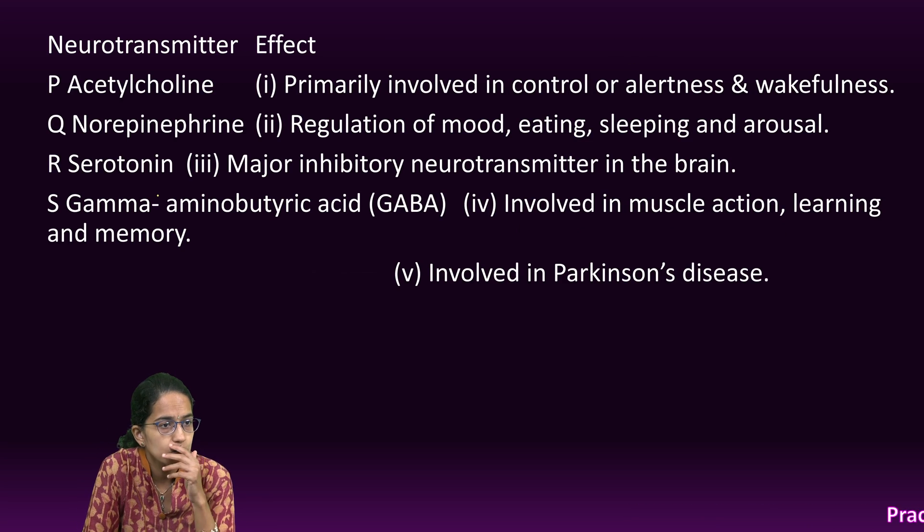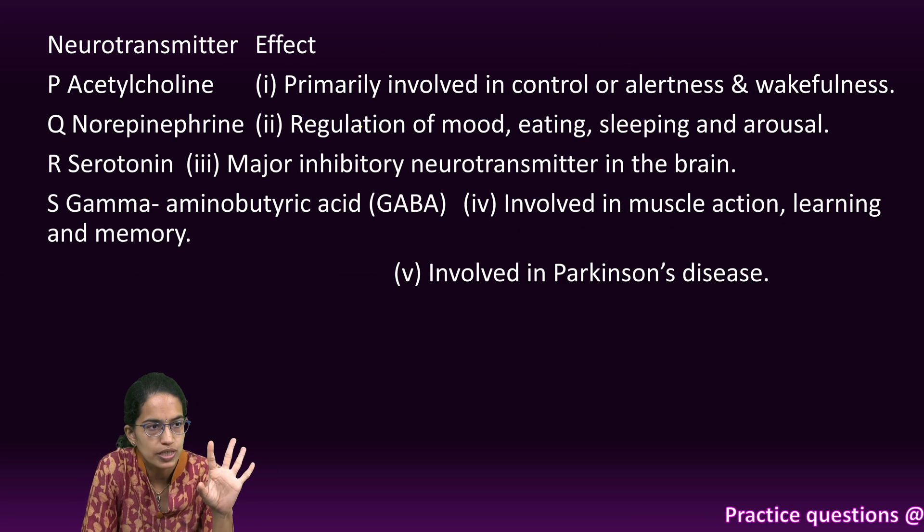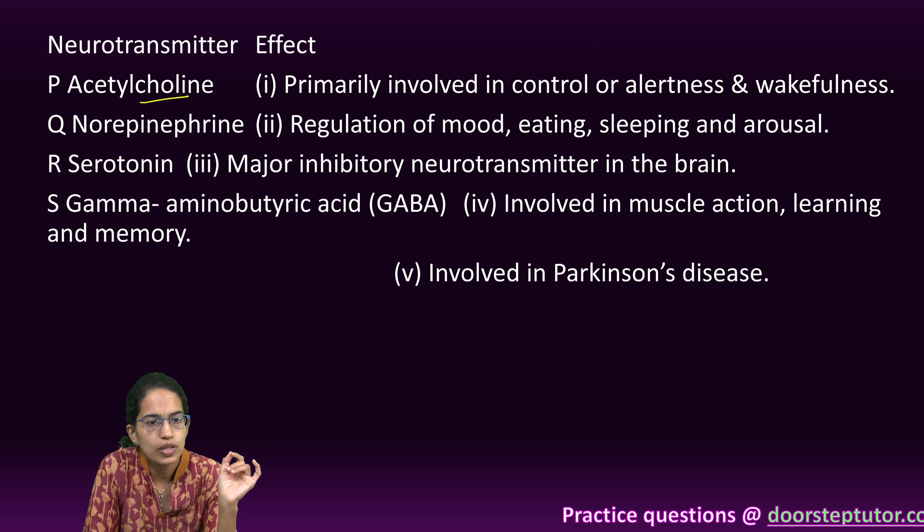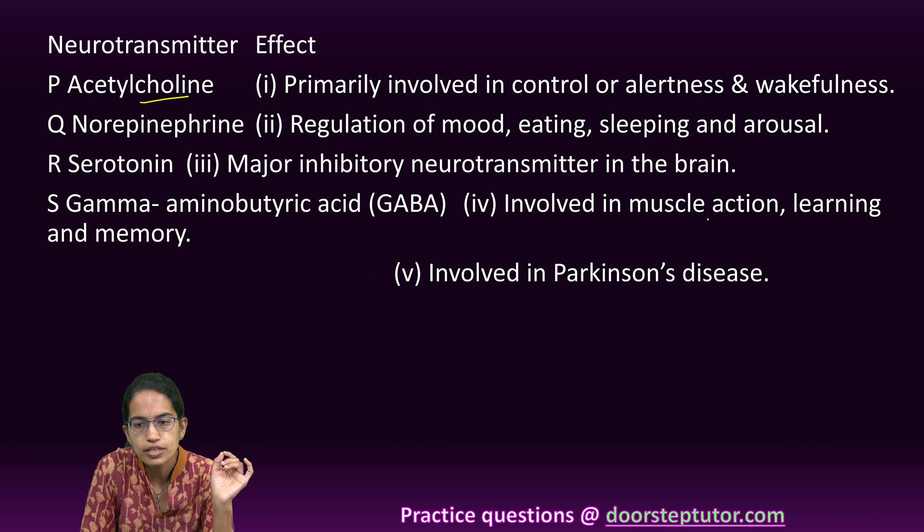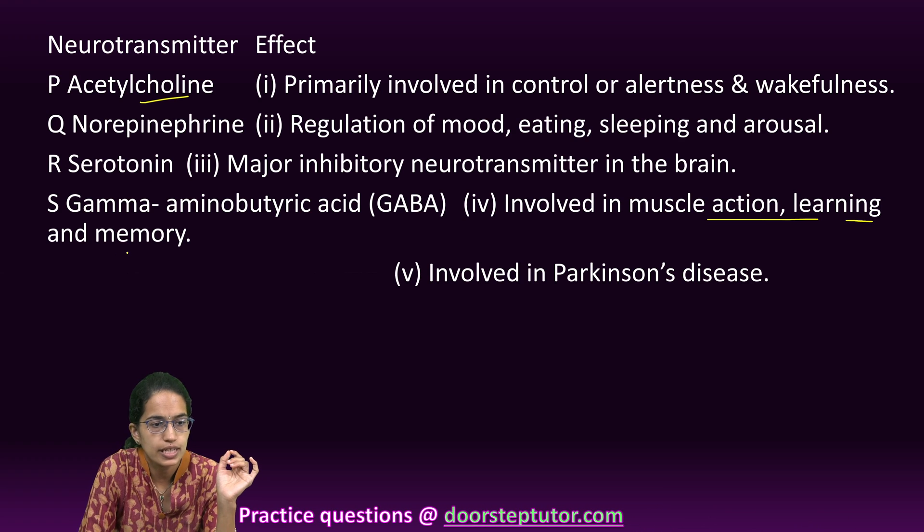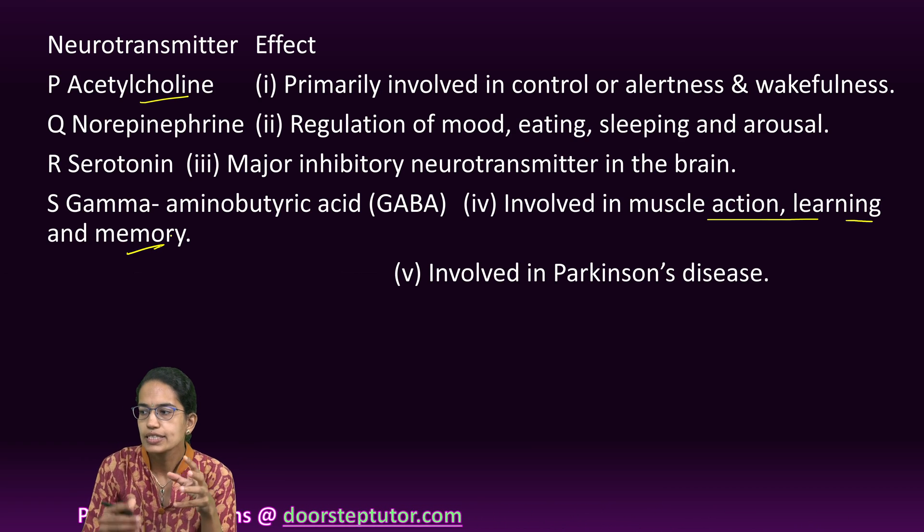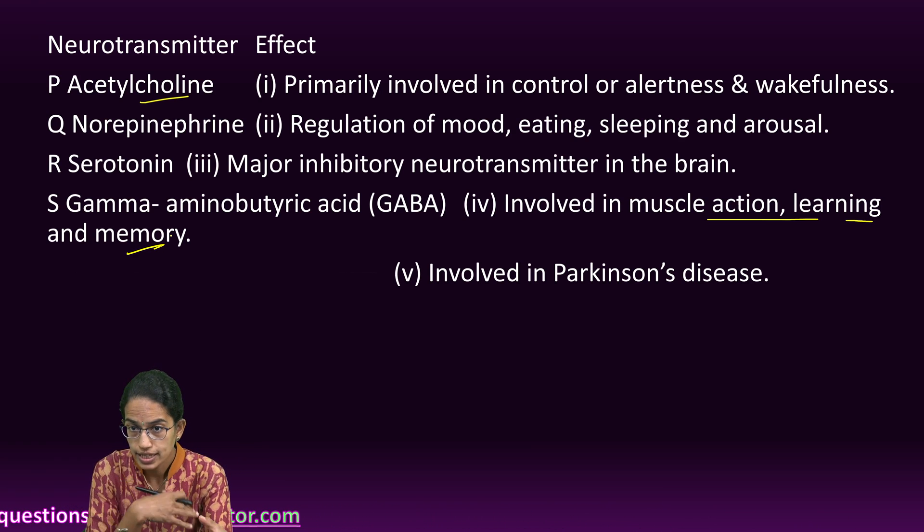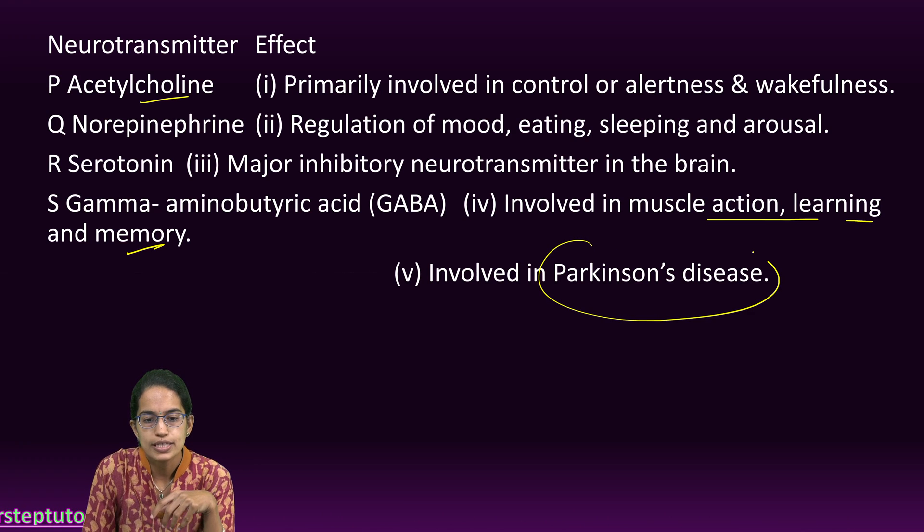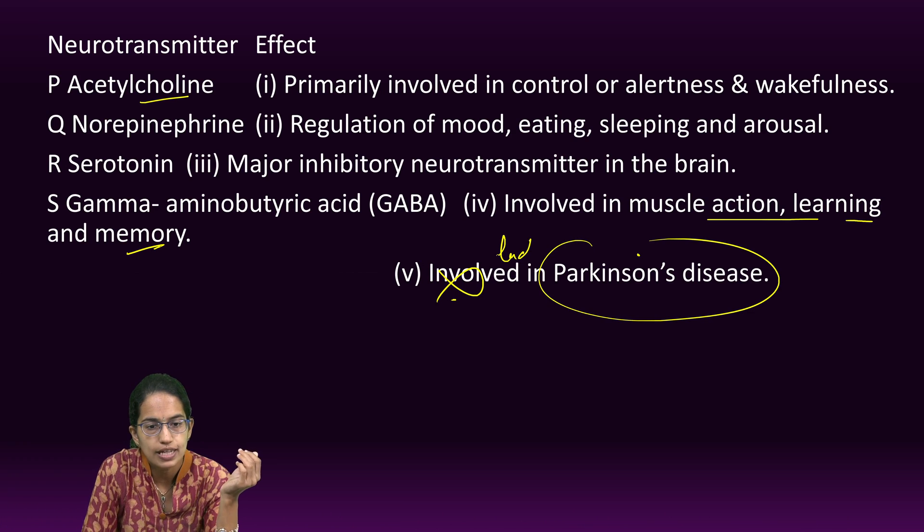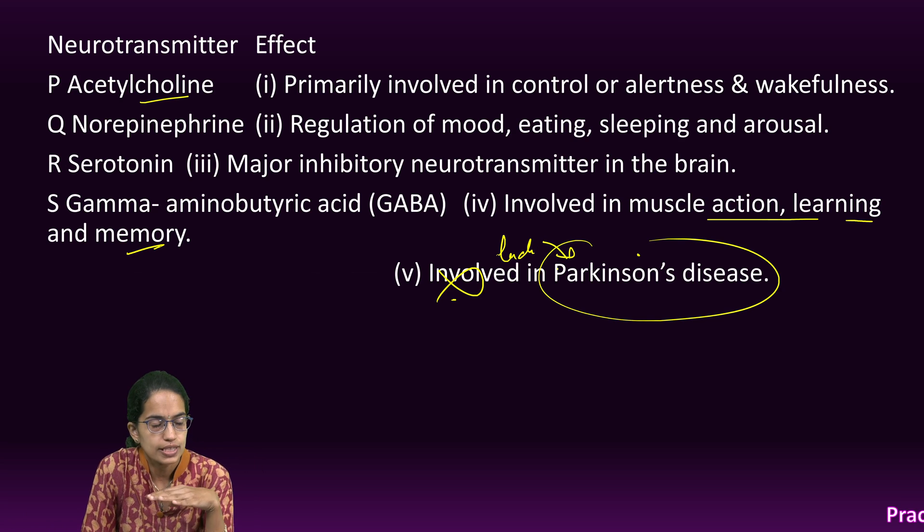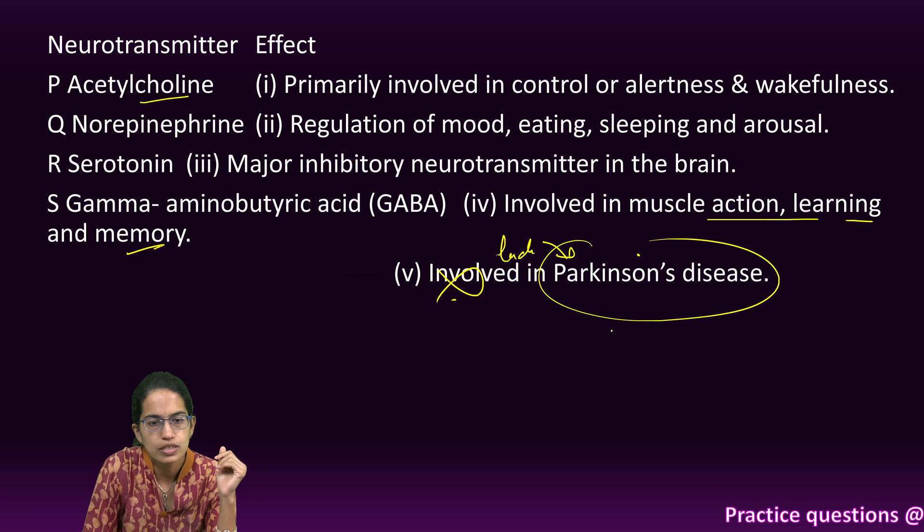The next question, we have the neurotransmitters and the effect. We have to understand those. Acetylcholine is involved in muscle action, learning and memory and if acetylcholine is low, it would lead to Parkinson's disease. It's not involved in Parkinson's disease but lack of acetylcholine would lead to Parkinson's disease. P goes with 4.